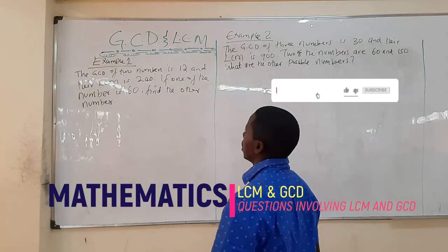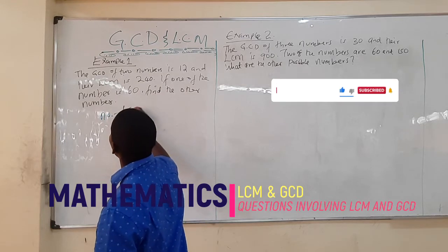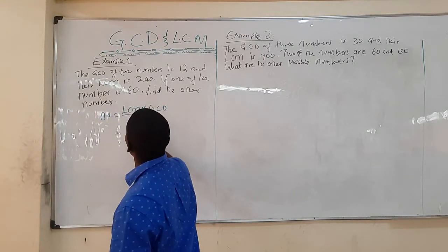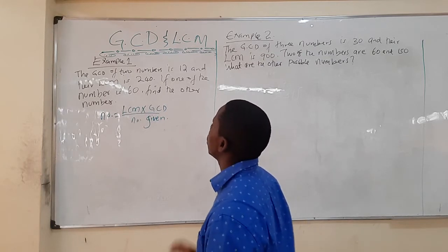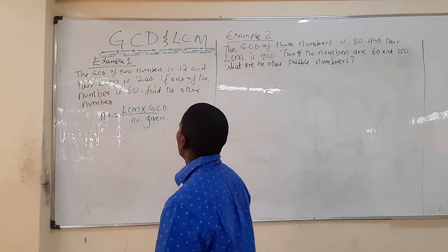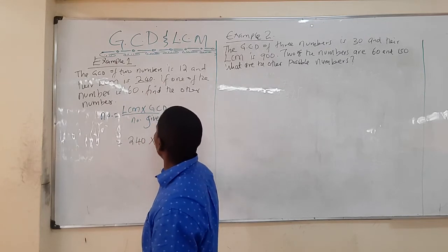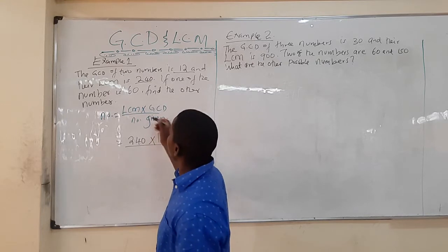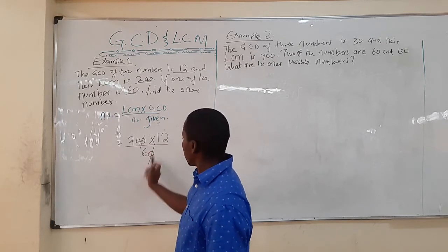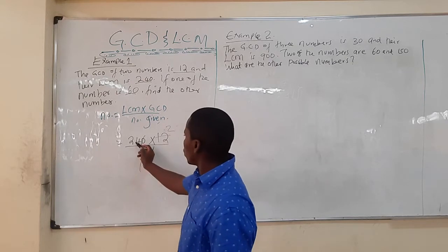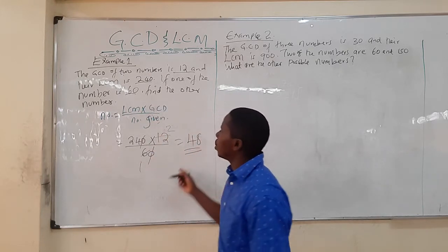Whenever you're given two numbers like in this case, you have a formula to find the other number. The number you need to find is given by LCM times GCD divided by the given number. This formula can only be used when you have two numbers. So our LCM is 240, GCD is 12, and the given number is 60. Substituting and simplifying: 240 times 12 divided by 60 gives us 48.